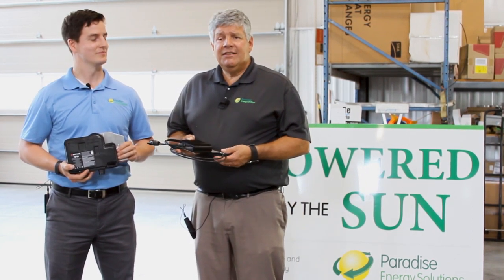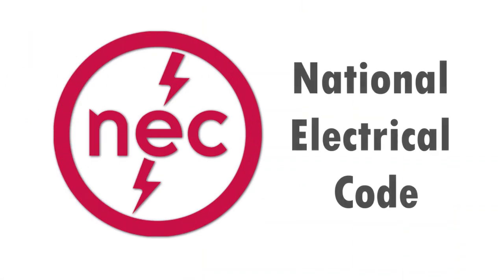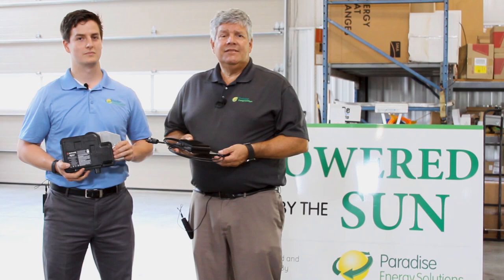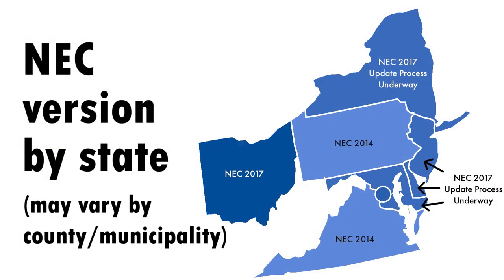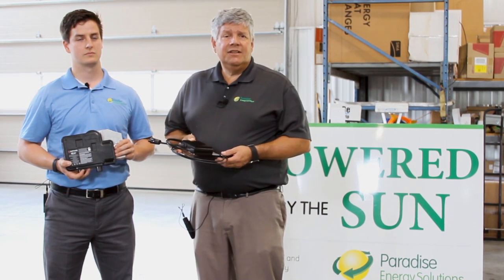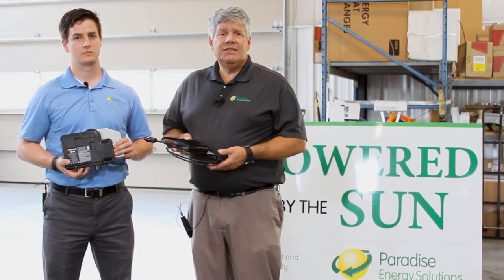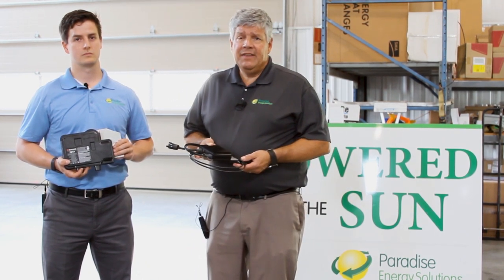Rapid shutdown is based on the National Electric Code. The current revision is 2017, though some towns and states use 2014, so there are different requirements based on those two versions of the electric code. We always make sure we adhere to the requirements of the National Electric Code based on the region where we're installing your solar system, so you can rest assured we're installing it according to the current edition of the code being enforced in your area.